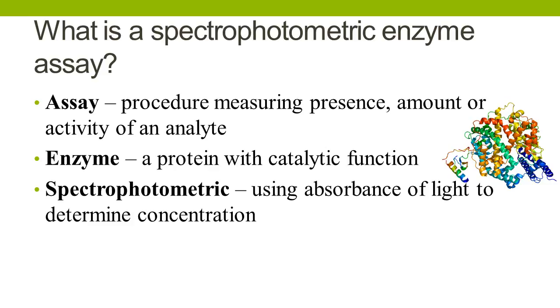And lastly, we have spectrophotometric. This is the use of light to make a measurement. So we have a spectrum where we have light of different wavelengths. We have photo, photons of light, and metric is a measurement. So spectrophotometry is any measurement based on light or the absorbance of light.